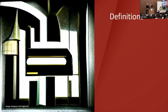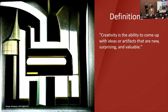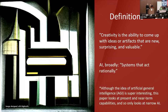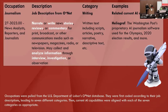First I needed to define creativity. I drew on cognitive psychologist Margaret Boden, who works specifically with artificial intelligence and creativity. Her definition: creativity is the ability to come up with ideas or artifacts that are new, surprising, and valuable. For AI, I broadly used Norvig and Russell's concept that systems act rationally, focusing specifically on narrow AI, since that is what currently exists. Here's an example of an occupation as defined by O*NET, the Occupational Network from the U.S. Department of Labor.